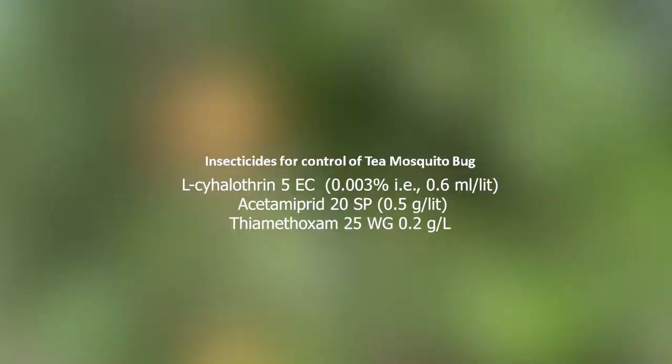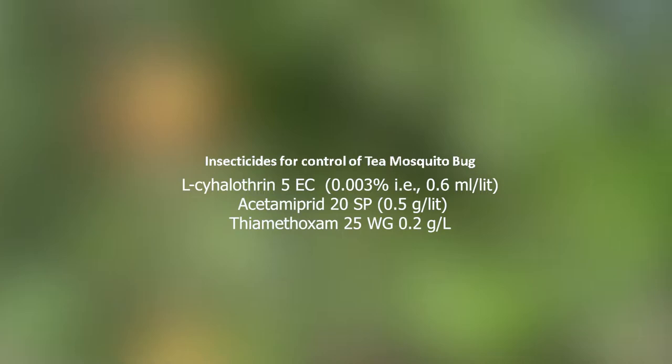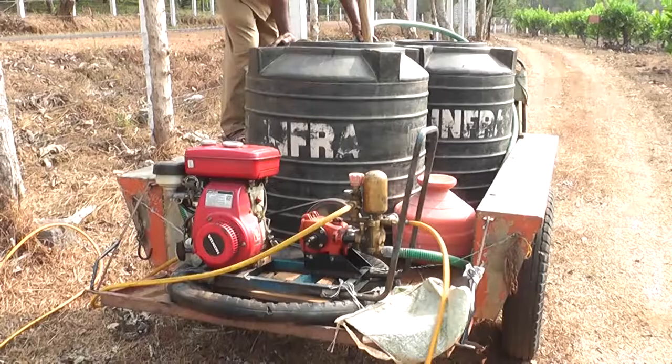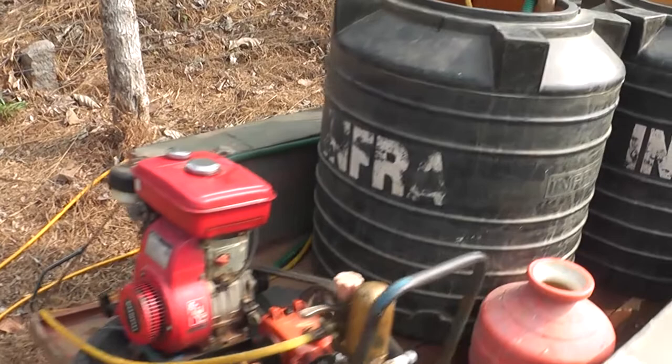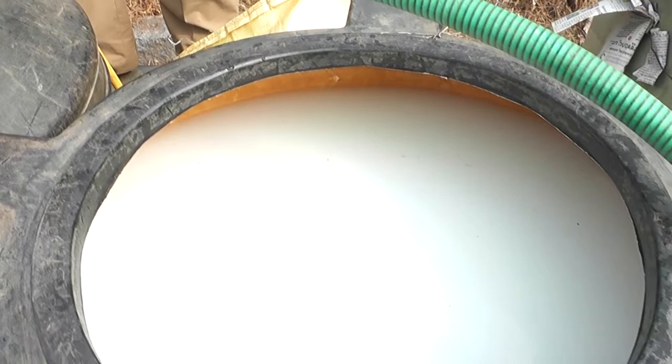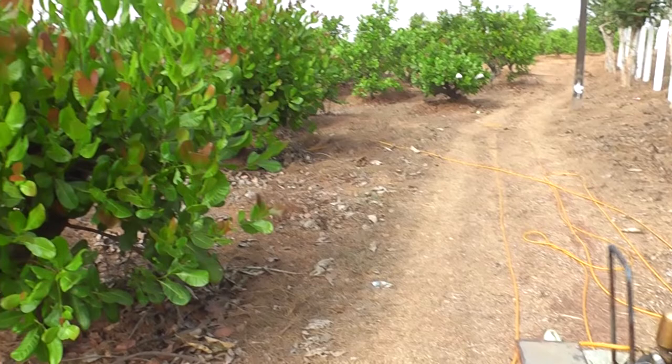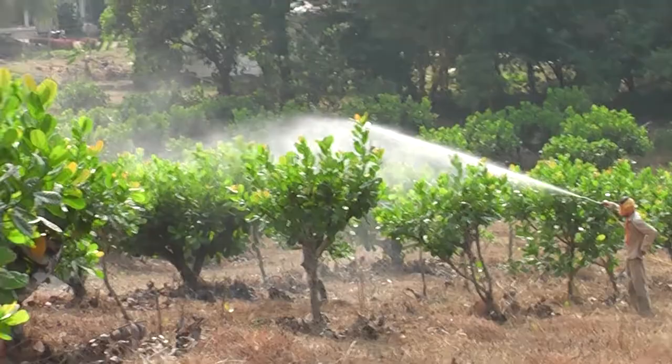Lambda-cyhalothrin 5 EC at the rate of 0.6 milliliter per liter, acetamiprid 20 SP at the rate of 0.5 gram per liter, or thiamethoxam 25 WG at the rate of 0.2 gram per liter are found to be effective in managing tea mosquito bug. Whenever the incidence of pest is noticed on five to ten percent of the flushes, the first round of pesticide spray should be given.